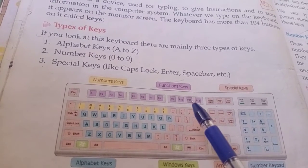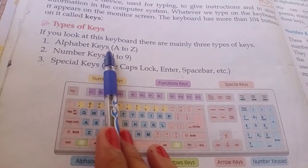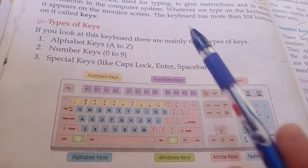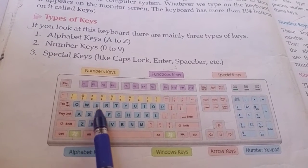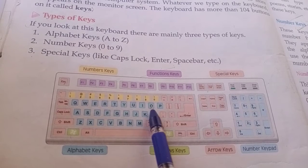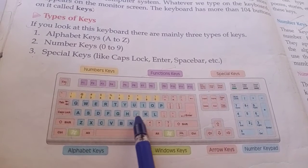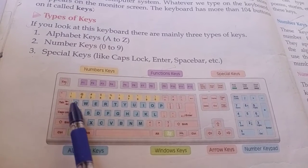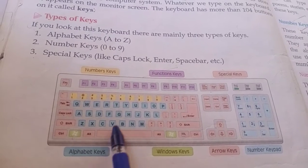It has three types of keys. First are alphabet keys — this means A to Z letters. Starting with Q, W, E, R, T, Y, U, I, O, P, then A, S, D, F, G, H, J, K, L, then Z, X, C, V, B, N, M. These are the alphabet keys.